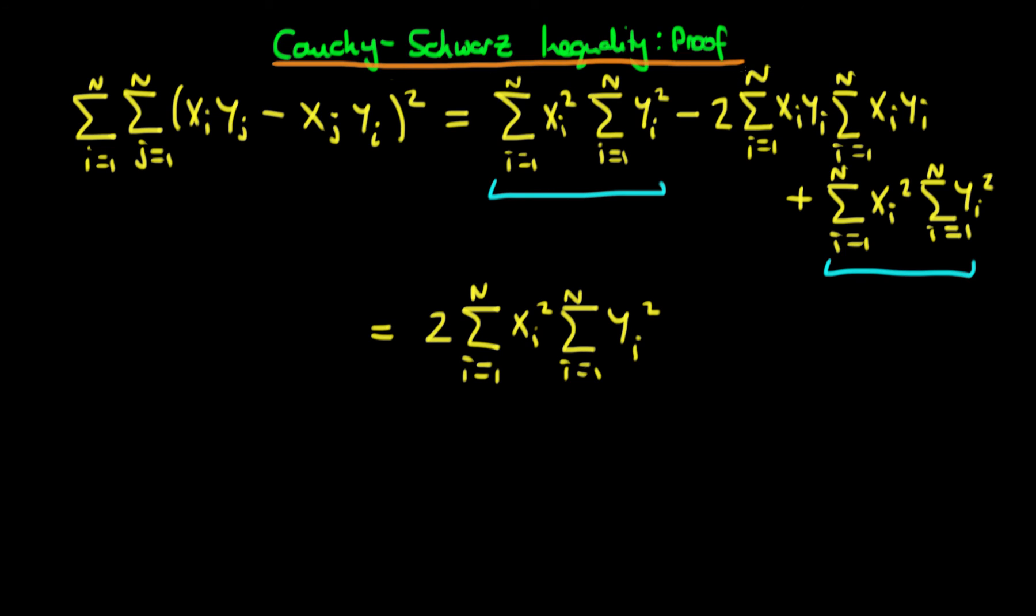Then what we do is we notice that for this second term, the first part of the second term is exactly the same as the second part, so we can rewrite this second term as just being minus 2 times the sum from i equals 1 to n of xi times yi. And then what we need to do is we need to square this entire expression.